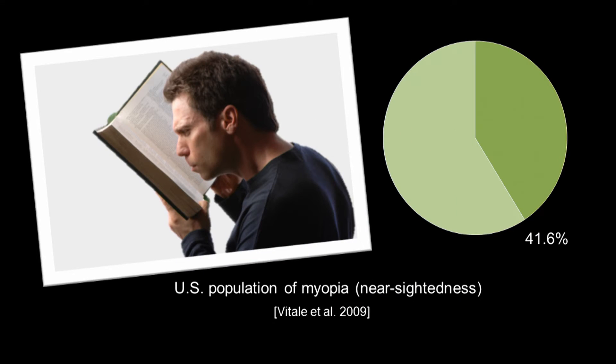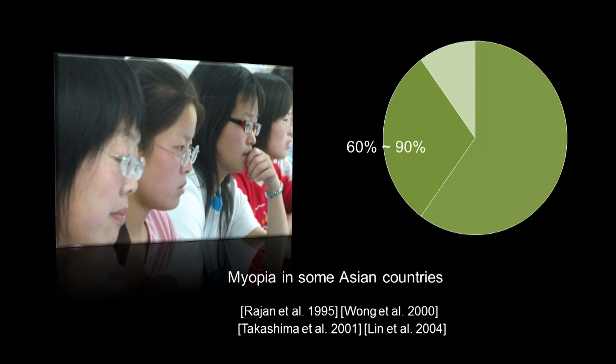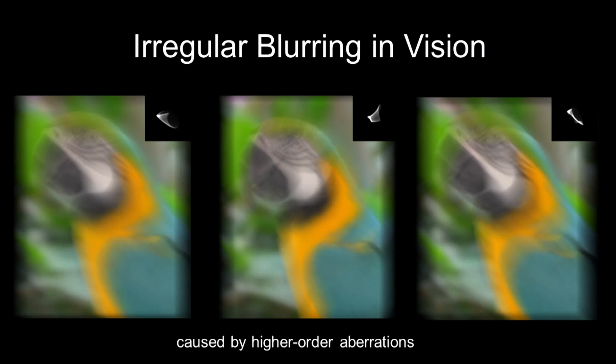In the meantime, a recent study shows that myopia in the United States has increased to 41%, which is pretty high. But the number in certain Asian countries has approached a crazy 60% to 90%. Although these conditions can be solved with just wearing eyeglasses, there are also certain people having higher order aberrations where the blur they perceive is irregular. This is very difficult to correct. Maybe we need a new solution.